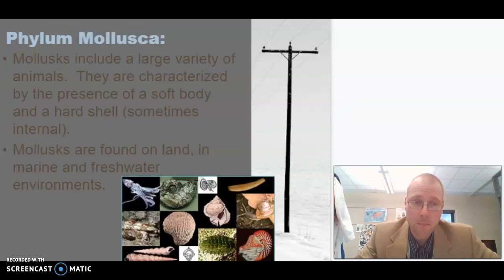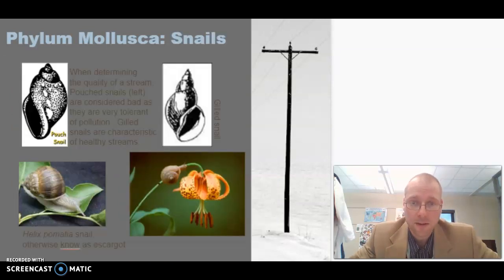Next, we have the mollusks. Mollusks include a large variety of animals. They all have soft bodies, but they often have a hard shell. Mollusks can be found on land, terrestrial, or in marine, ocean, or in freshwater environments. So we have some aquatic snails that are used for determining the health of a stream. In Europe, they eat escargot snails. There he is. They eat those. I've never had escargot. I eat a lot of things. Snail's not on the list.